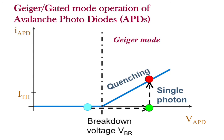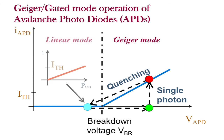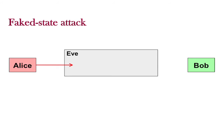But what happens if we illuminate the APD after the gate? With a bias voltage below the breakdown voltage, the APD is in a linear mode. This means that current through the APD is proportional to the optical power. The APD merely registers whenever the power is relatively strong. The detector therefore has properties which are very much unlike the ones during the gate, and also unlike the ones assumed in the security proof. In our publication, we show how to exploit this deviation.